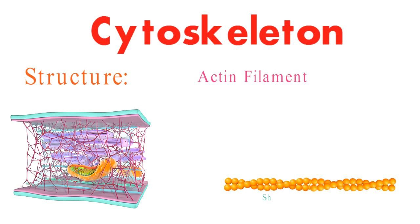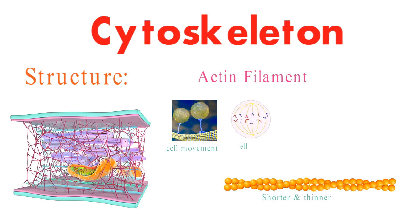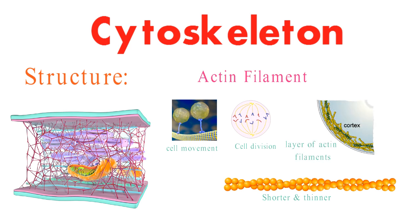Actin filaments are shorter and thinner than microtubules, and they are involved in cell movement and division. They are also involved in forming the cell cortex, a layer of actin filaments that lies just beneath the plasma membrane. Actin filaments are made up of actin proteins, which assemble into long, double-stranded filaments.